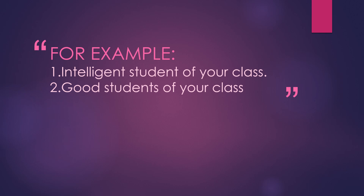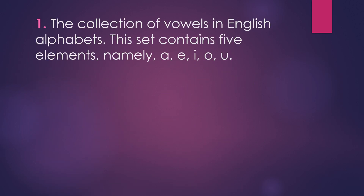But intelligent students of your class are a set, because all of them can be clearly identified. For the first example: a collection of vowels in English alphabets. We can write this as a set. This set contains five elements, namely a, e, i, o, u. We can all agree on this, so this is a set.